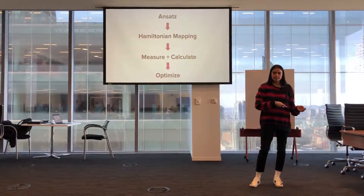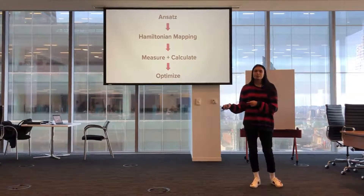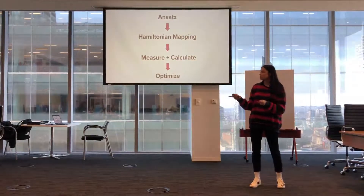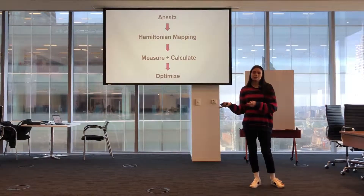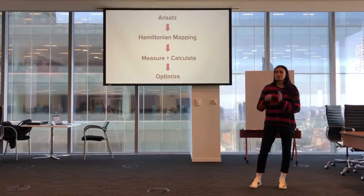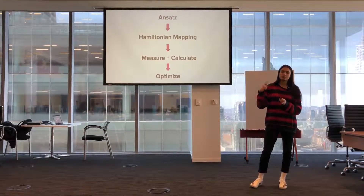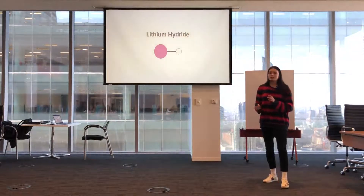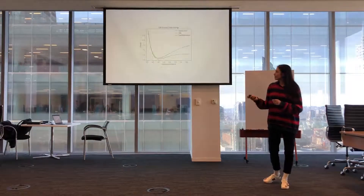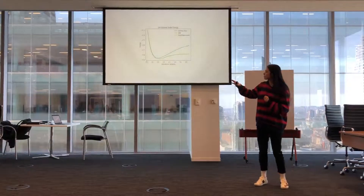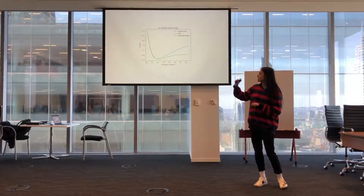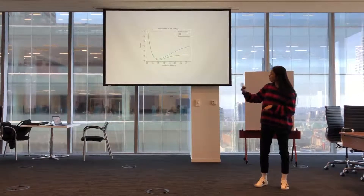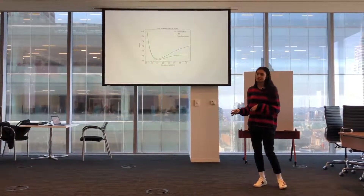There are four different parts to the Variational Quantum Eigensolver. First, we have to create an ansatz. After that, we map the molecular Hamiltonian into a qubit Hamiltonian. Then we measure all our values and calculate the expectation value. Finally, we optimize our parameters and reiterate through the loop. Using these four steps, I was able to find the ground state energy of lithium hydride, and the values converge perfectly compared to the exact eigensolver.